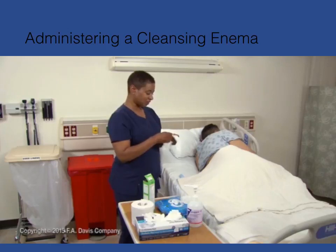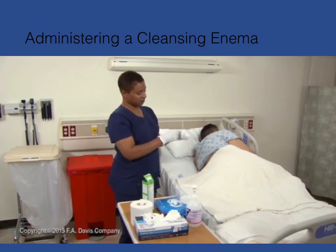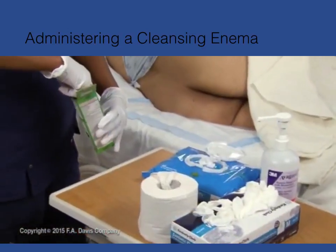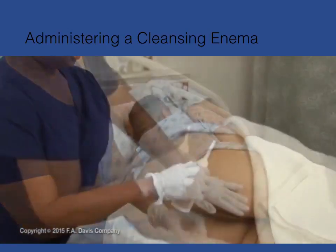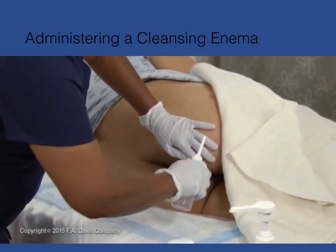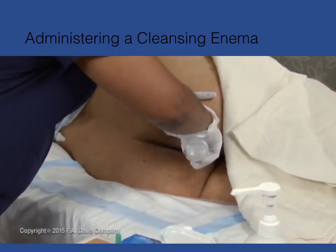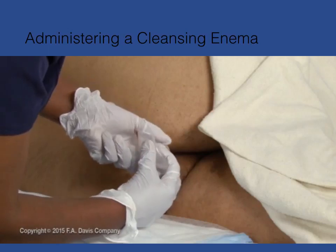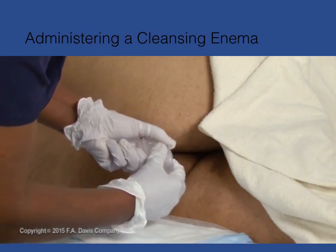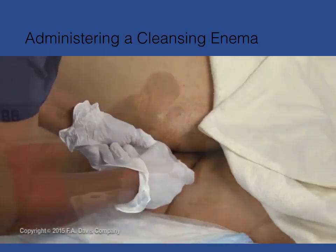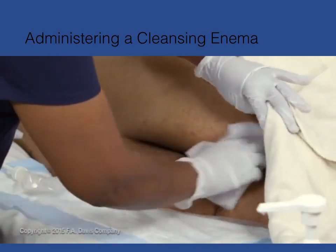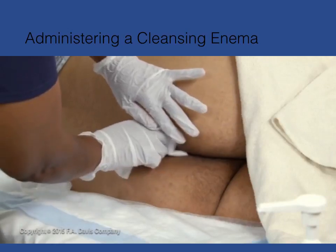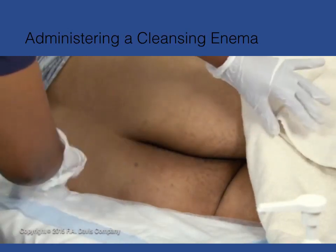For a pre-packaged enema, perform the same steps as for a cleansing enema — gloving, positioning, and so on — with the following differences. Open the package and remove the cap from the container; clip the tip if it does not have a hole in it. You may need to add extra lubricant even though the tip is pre-lubricated. To instill the solution, tilt the container slightly and slowly roll and squeeze it until all of the solution is instilled. Withdraw the container tip from the rectum, wipe the area with a disposable wipe or toilet tissue, and dispose of the empty container.